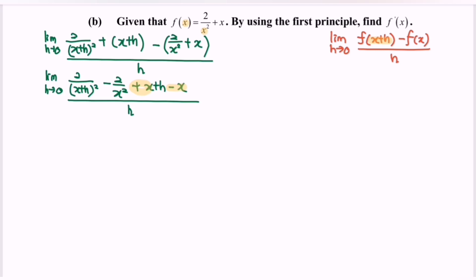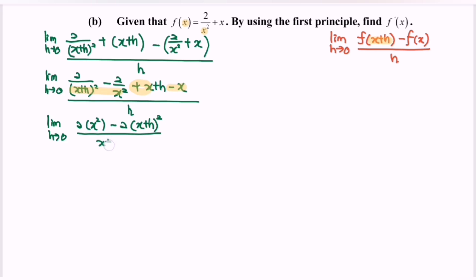Next, for this part we are going to equate the denominator. So limit when h approaching 0: 2 multiplied with x squared minus 2 multiplied with (x plus h) squared, over (x plus h) squared multiplied with x squared.